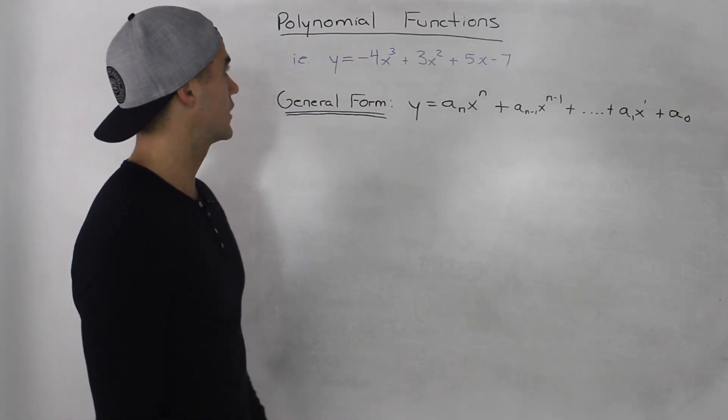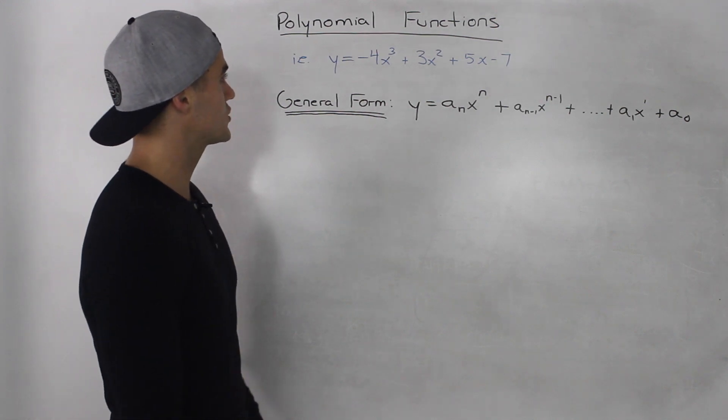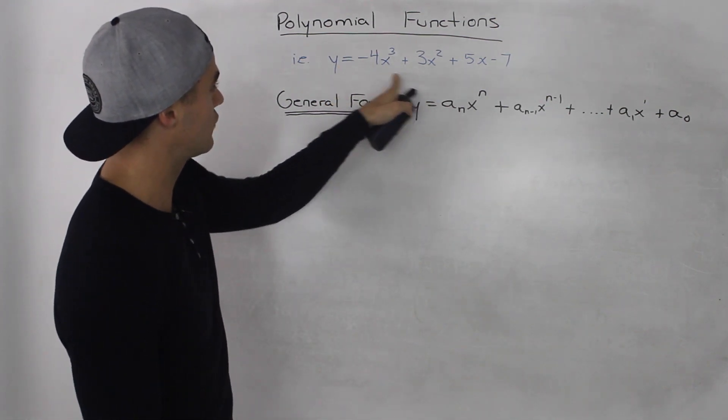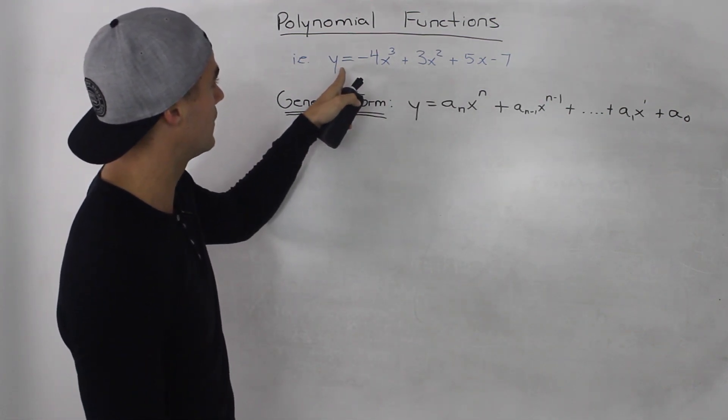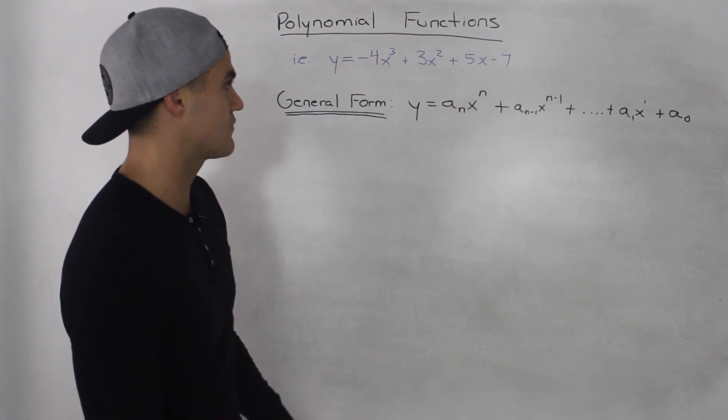What's up guys, so in this section we're going to be talking about polynomial functions. And polynomial functions in general take this kind of format. So this is an example: y equals negative 4x cubed plus 3x squared plus 5x minus 7.